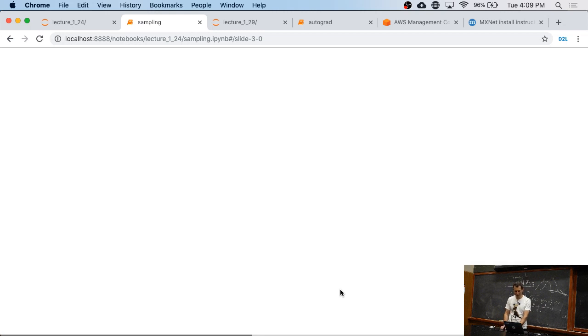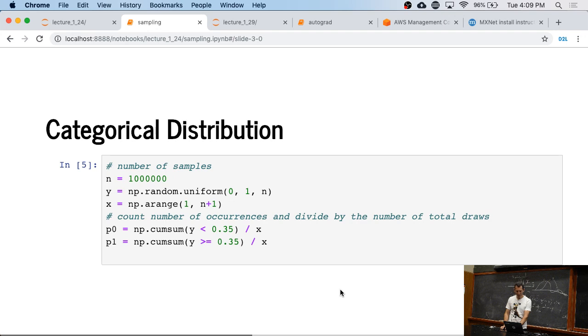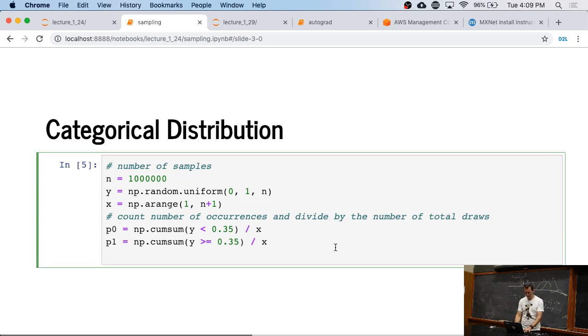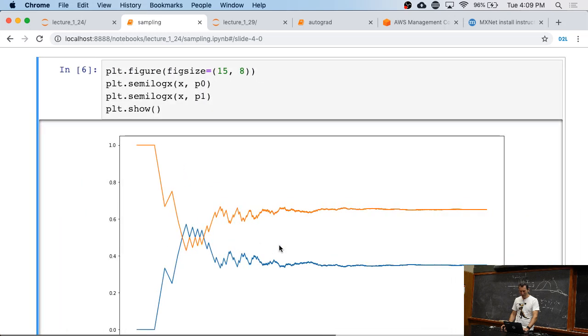And then I go and compute that thing again. I'm just checking for each of the random variables, a million of those, whether they are less or larger than 0.35. I'm doing this in bulk here. That's a lot faster than a for loop. But I guess from homework one, by now, everybody knows that for loops are evil.